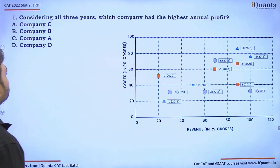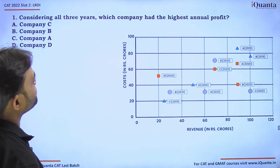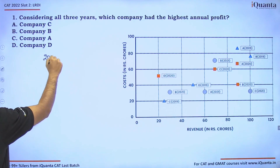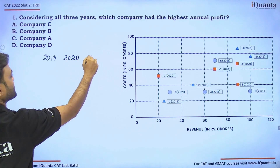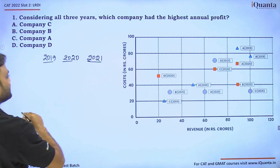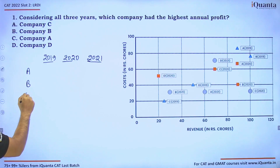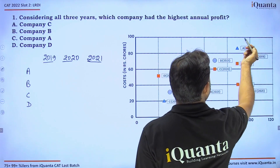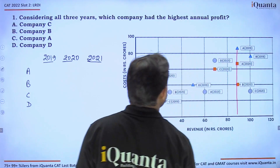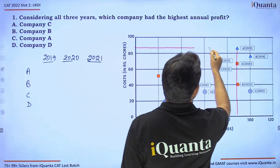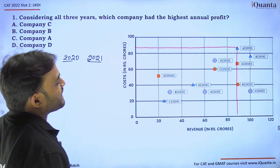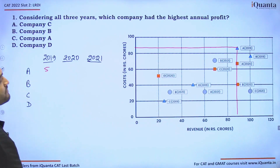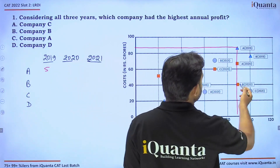Question one asks: considering all three years, which company had the highest annual profit? We need to find the profit for each year for each company. For A in 2019, revenue is 90 and cost is 85, so profit is 5. For A in 2020, revenue is 90 and cost is 65, so profit is 25 crores.